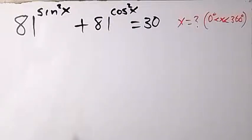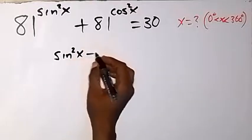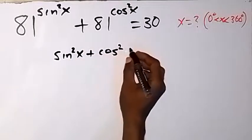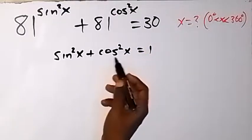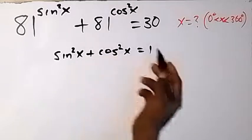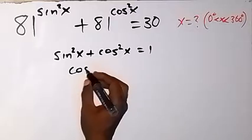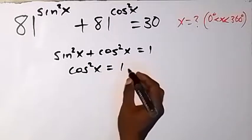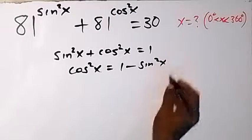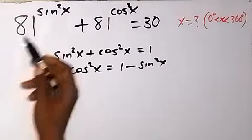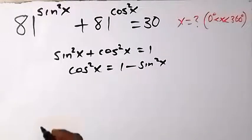Using the trigonometry identity sin²x + cos²x = 1, we take cos²x to this side and make cos²x the subject. We have cos²x equals 1 minus sin²x, so that we can write the equation again in the form of sin²x.